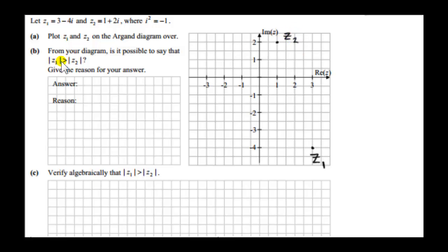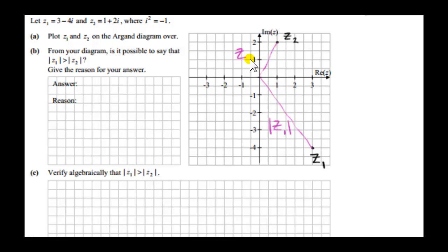Let's look at the modulus of Z1. That's just the distance of Z1 to the origin. I'll draw that line representing the distance of the complex number Z1 to the origin. The length of this line is mod Z1, or the modulus of Z1. And here is the modulus of Z2. You can see from the diagram that the modulus of Z1 is greater than the modulus of Z2.